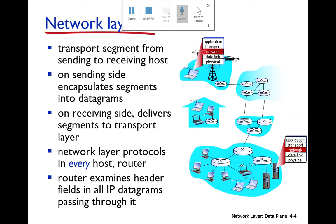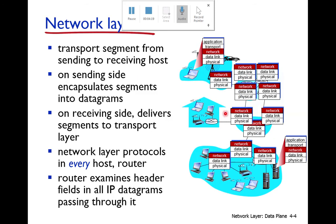The application layer and transport layer are only present on end systems — meaning routers, servers, and user devices connected to the internet. The application and transport layers are only available at the host. Routers do not run the application and transport layers, but the network layer runs at the host as well as at all routers. The network layer protocol is present in every host and every router.